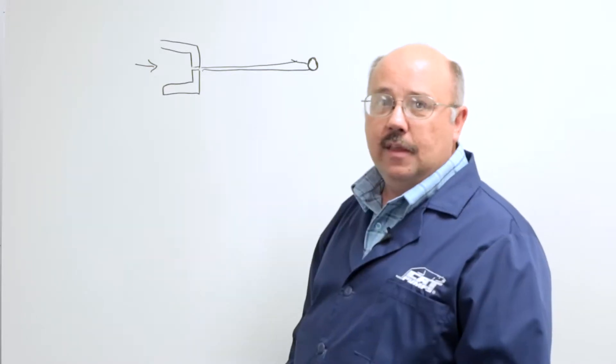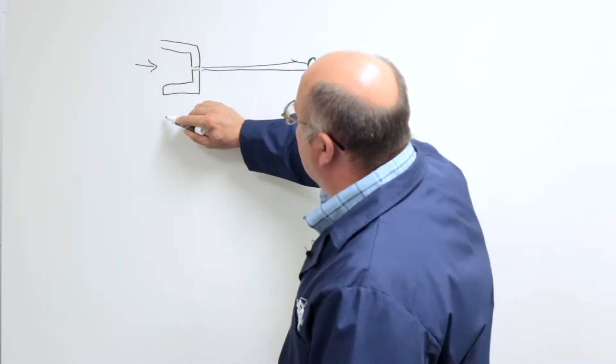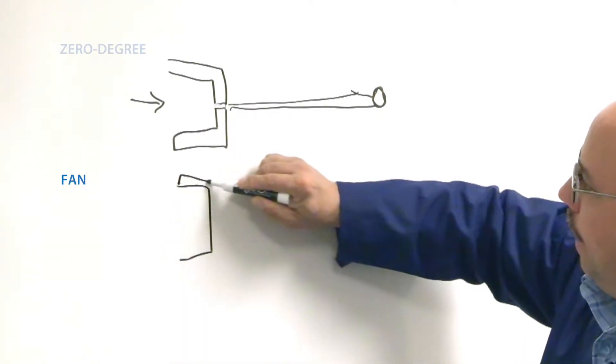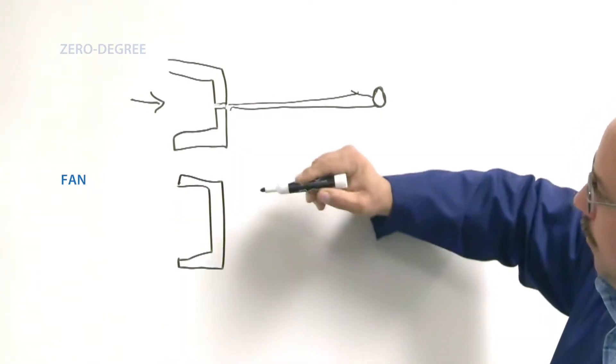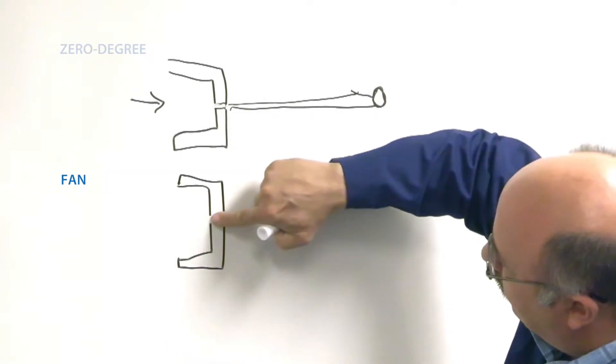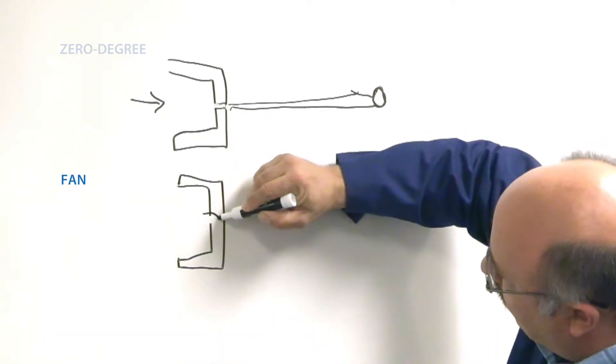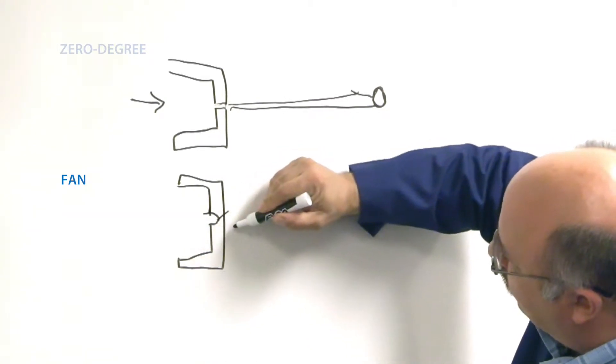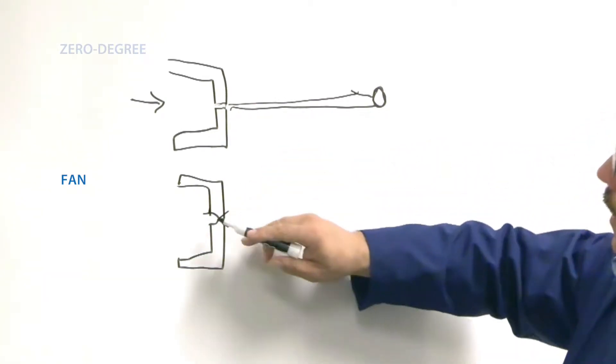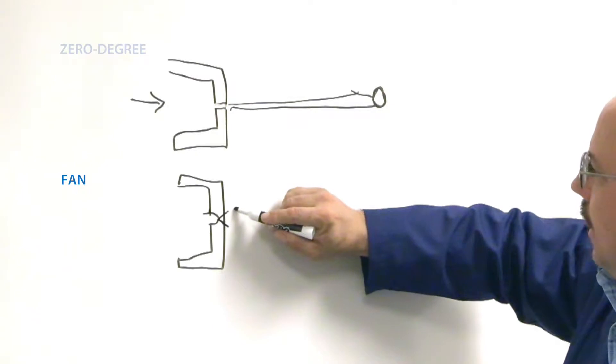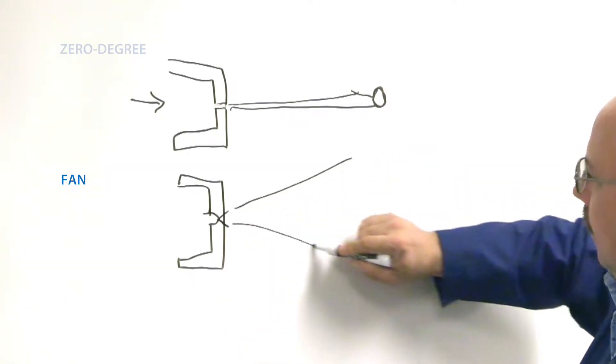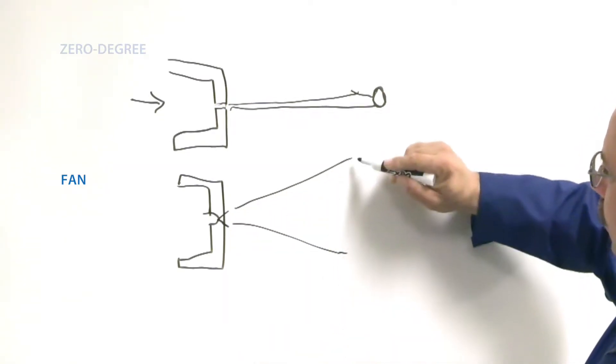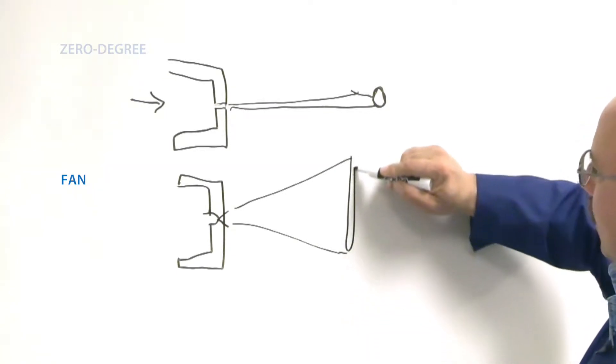And then we have the fan or cone spray nozzles. Again, we start with the same type of body. But then when it's machined, it's machined with a ball-shaped part that comes in, and then we cut a V shape in it. And the resultant spray that comes out of it is wide. It impacts a surface shape, makes a long skinny oval.